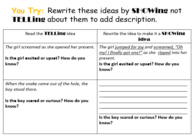Today's assignment: you are going to rewrite a sentence and change it from a telling sentence to a showing sentence. The sentence is: 'The girl screamed as she opened her present.' Is the girl excited or upset? How do you know? The example gives us: 'The girl jumped for joy and screamed, "Oh my, I finally got one!" as she ripped into her present.' Now we know the girl is super excited and this is something she's been wanting for a long time. The first telling sentence — when it said the girl screamed — could even make you think of a prank, like a plastic snake falling out of the box. That's different from the showing sentence, where the girl is very happy and got exactly what she was hoping for.